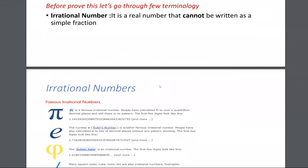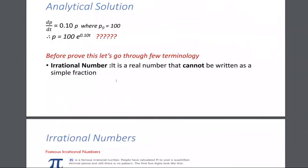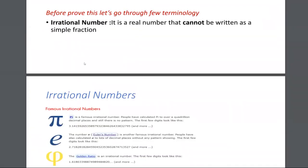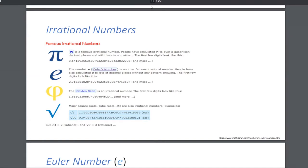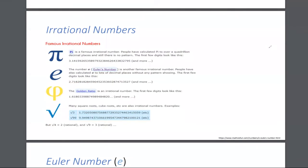So the first thing I want to teach you when it comes to this e: what does e stand for? There's a term called an irrational number. Does anybody know what an irrational number is? It's a number that has a decimal that doesn't repeat and goes on infinitely forever. Or another way to say it: it is a number you can never write as a fraction a over b.